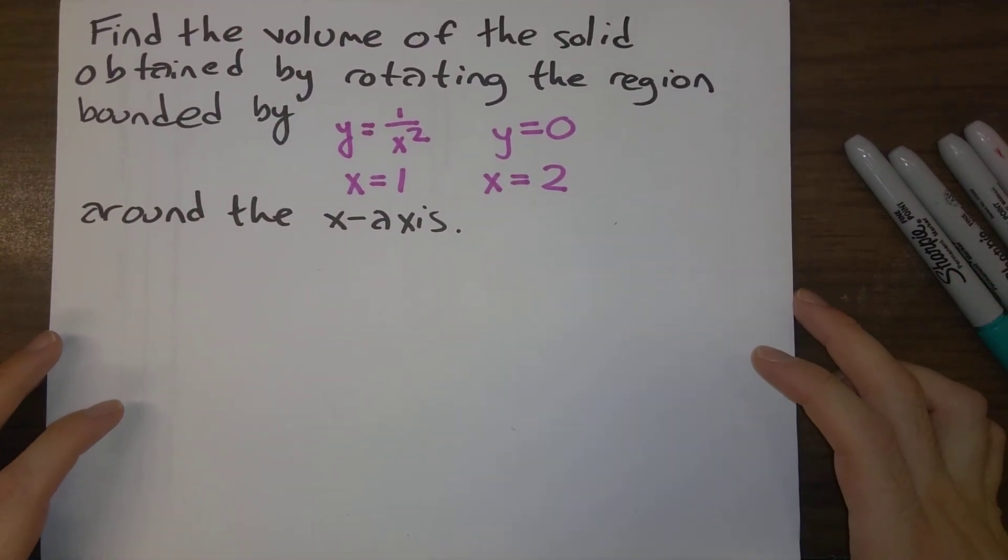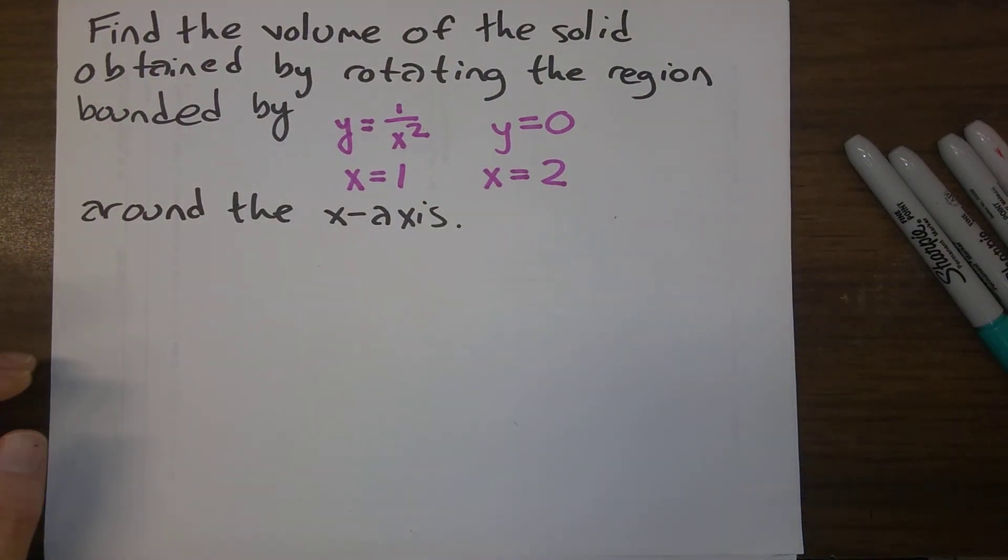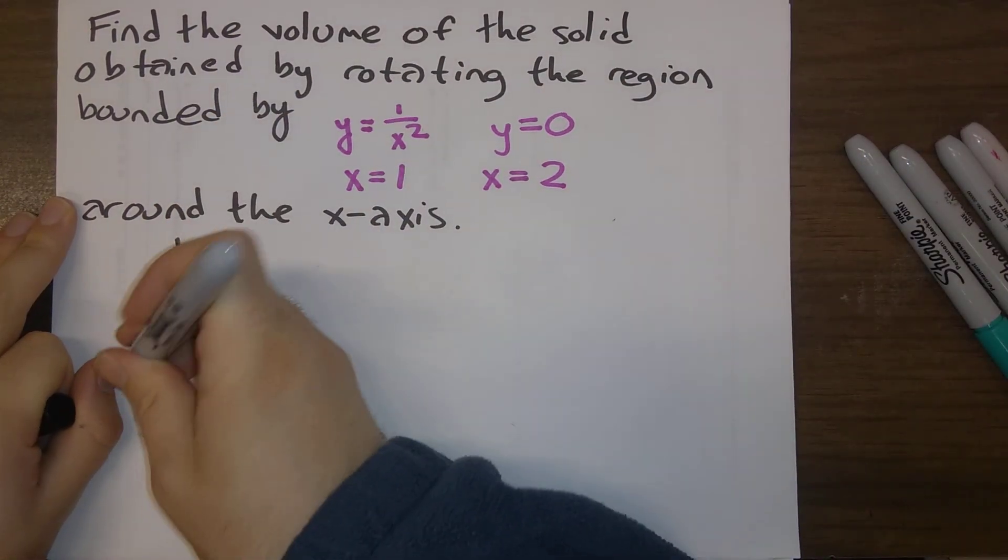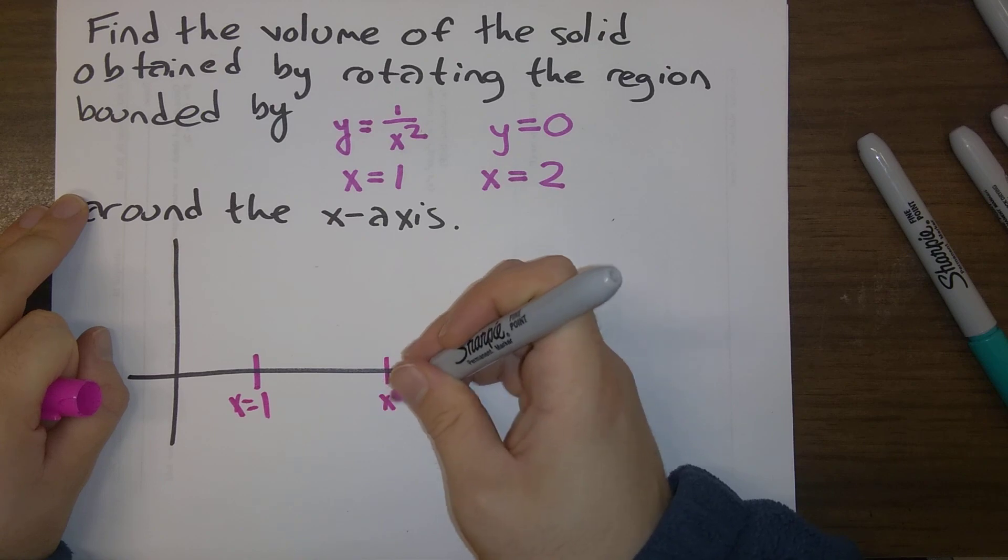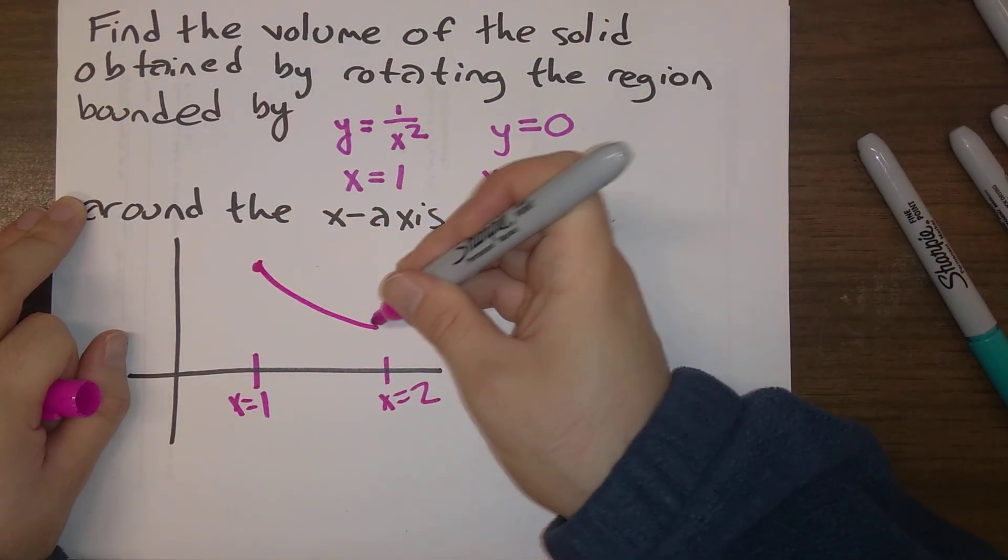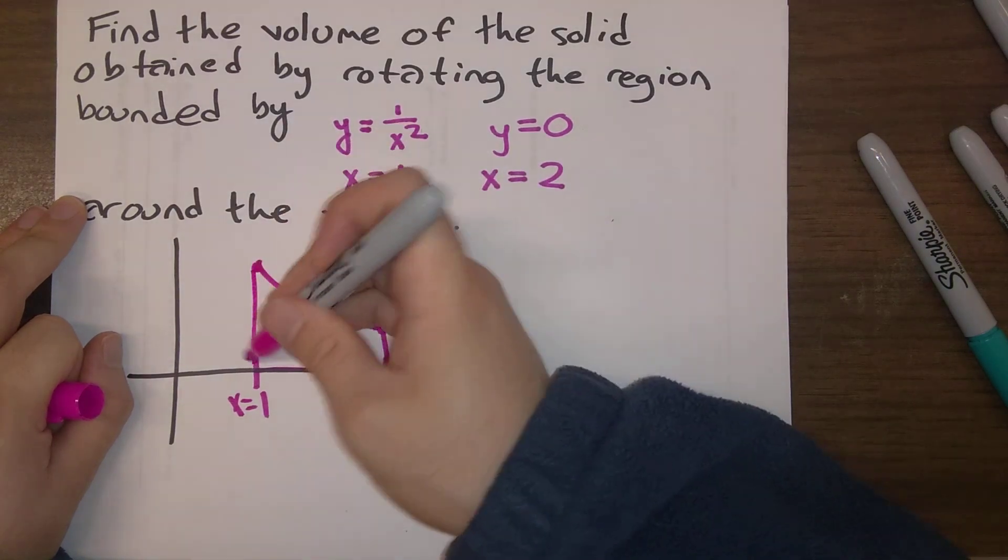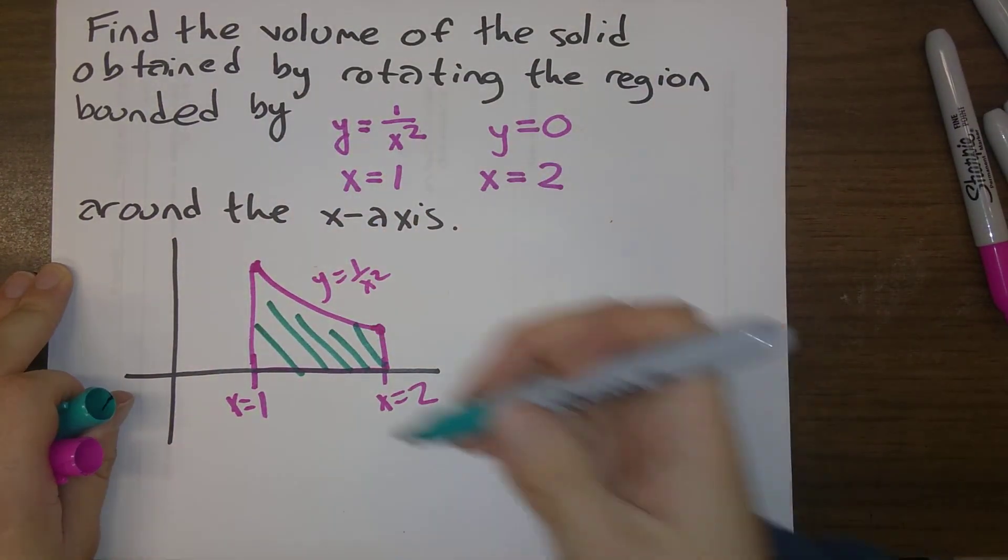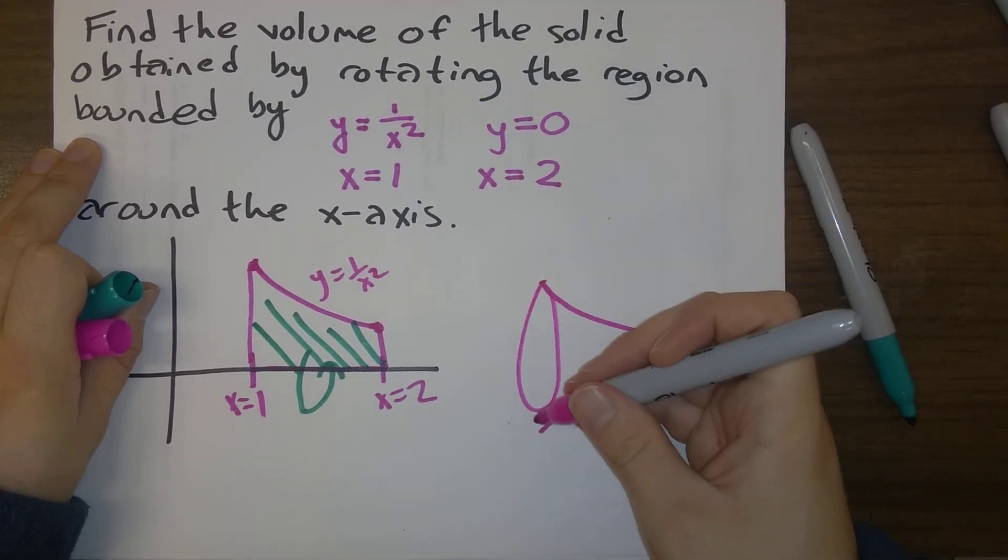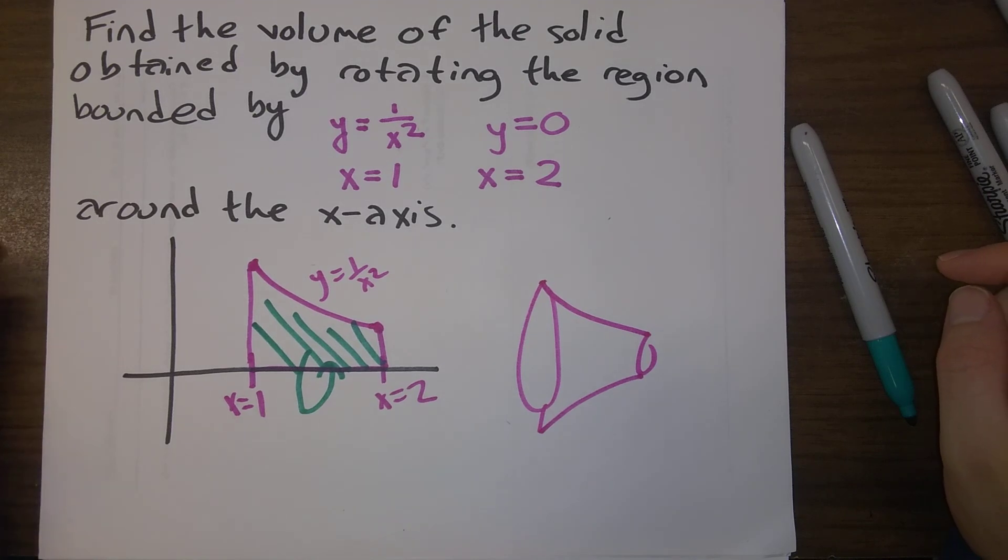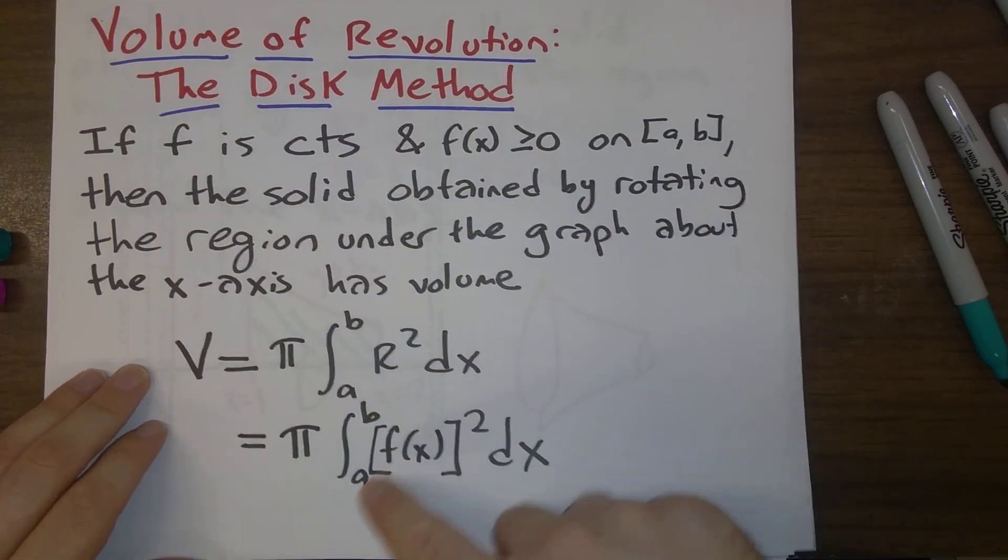Let's do an example with this. Let's find the volume of the solid obtained by rotating the region bounded by those four curves about the x-axis. So first off, what is this region? So x equals 1, x equals 2, y equals 1 over x squared, and y equals 0, that's just the x-axis. So this is the region that we are rotating around. So after we do it, this is the sort of shape we're finding the volume of.